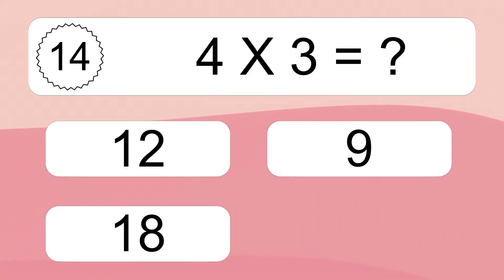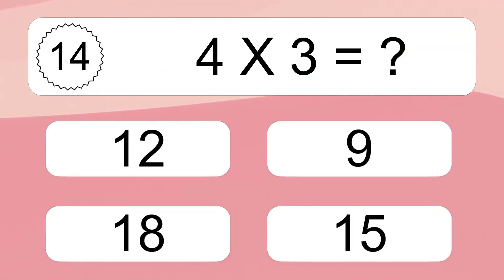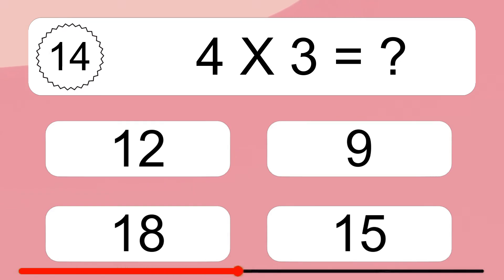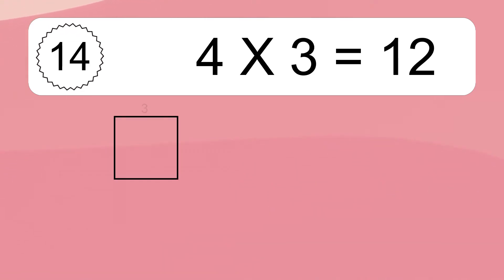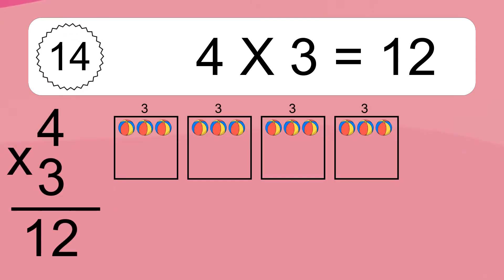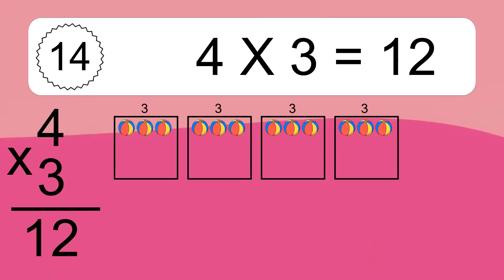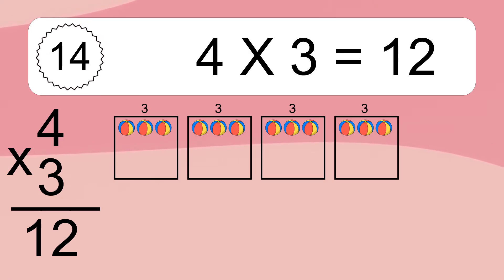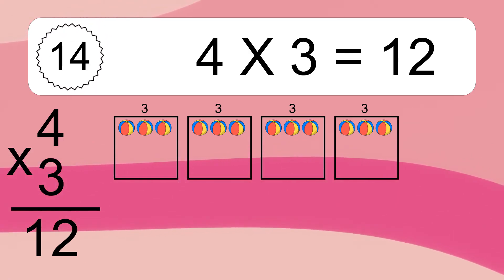Four times three equals what? Four times three equals twelve. We have four boxes and each box has three colorful balls inside. If you count all the balls in all the boxes together, you will have four times three balls. This equals twelve balls.